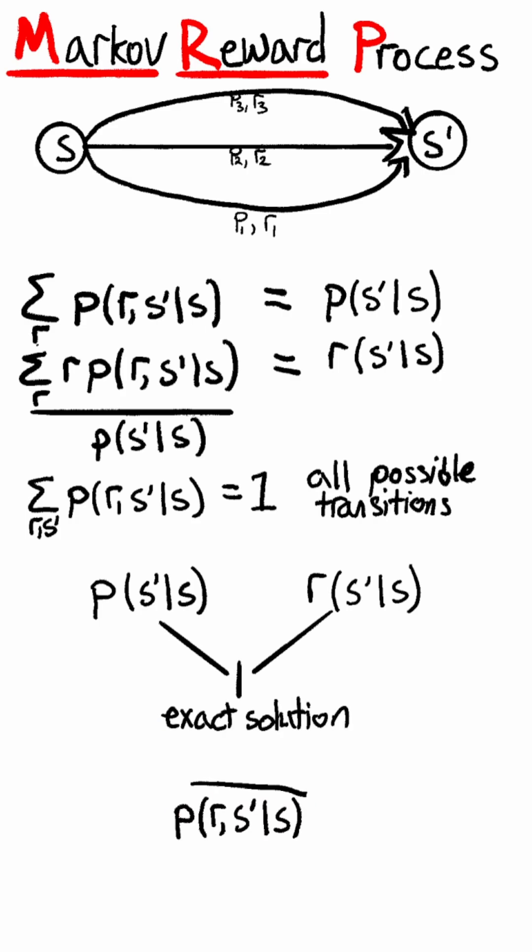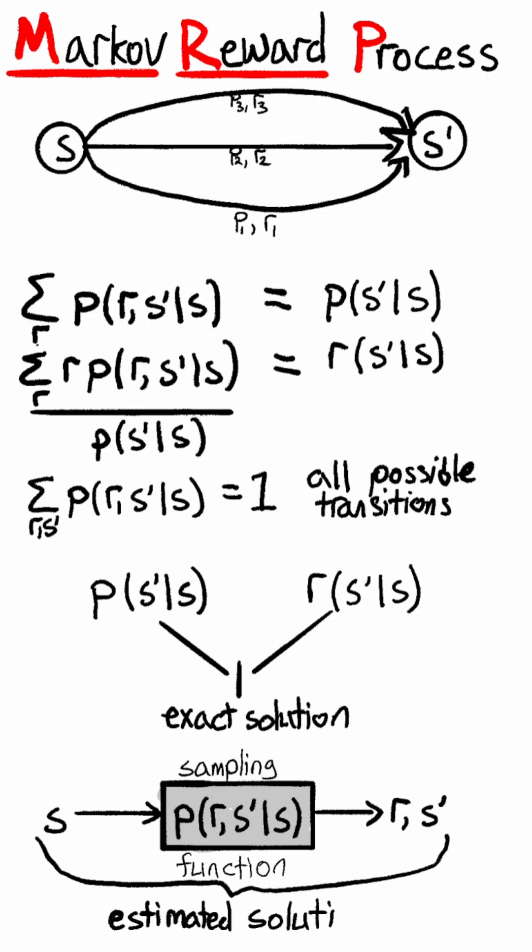Sometimes we don't know this function, but we may be able to extract information from a black box or simulator. Here, we provide a state and get a sample of the next state and reward. Over time, these samples can be used to estimate a solution.